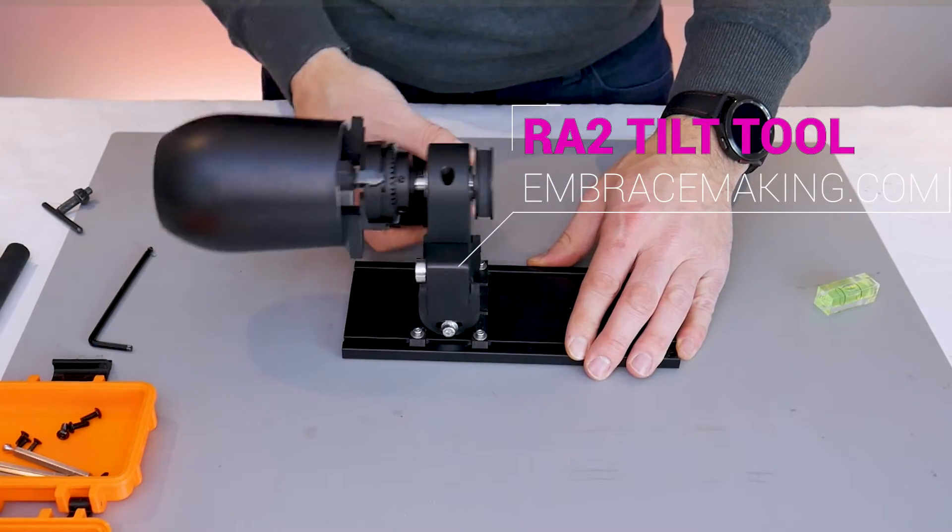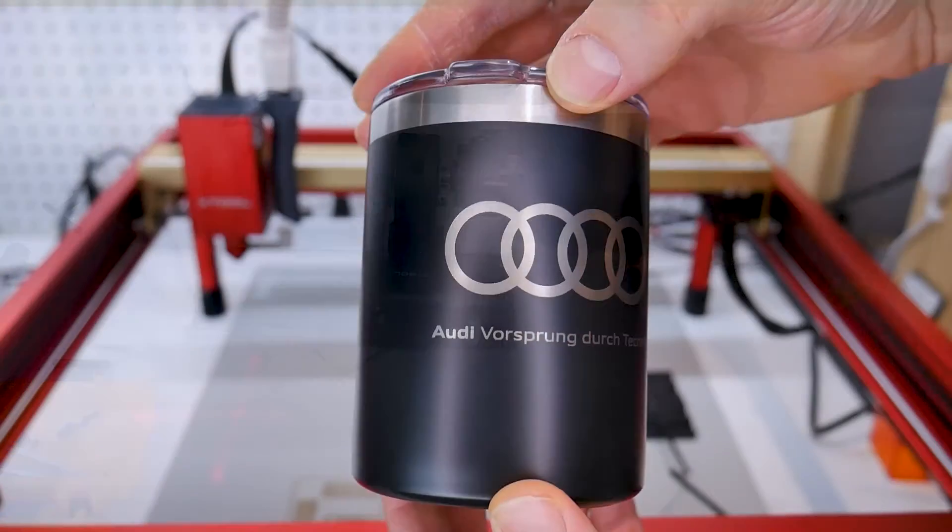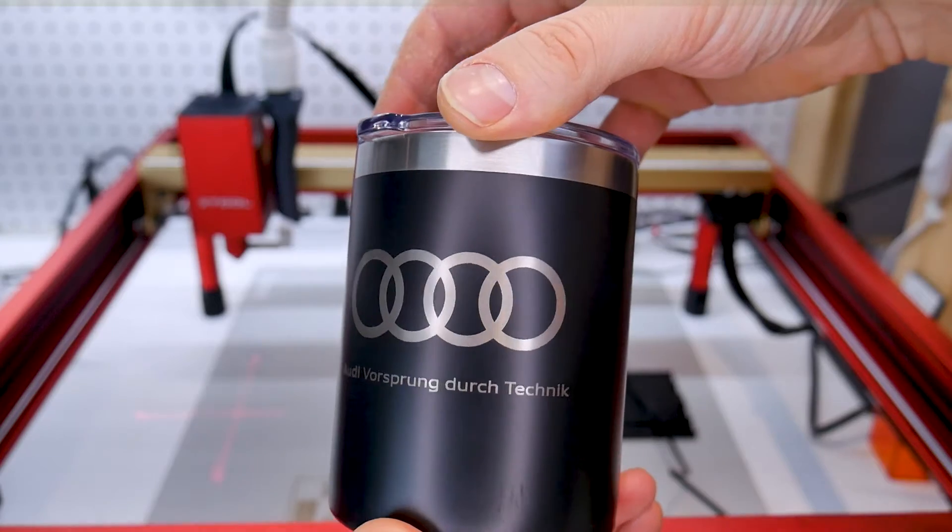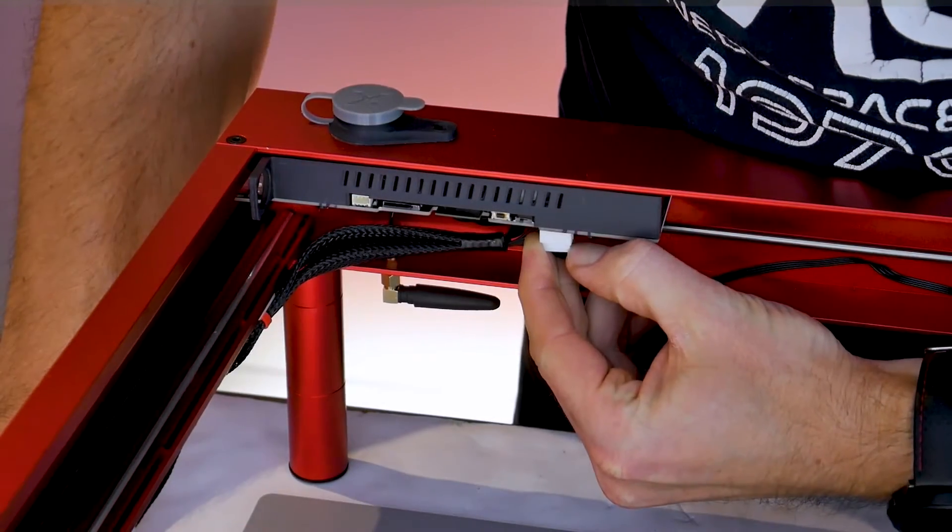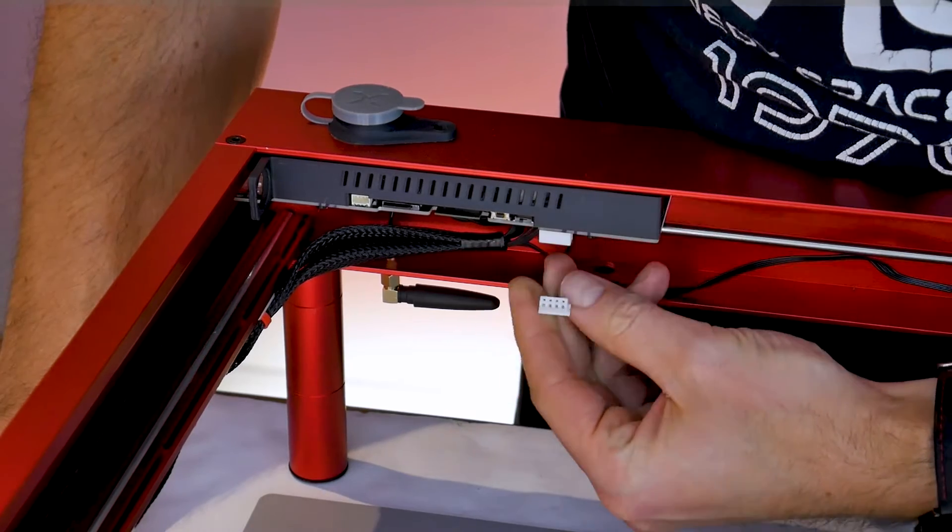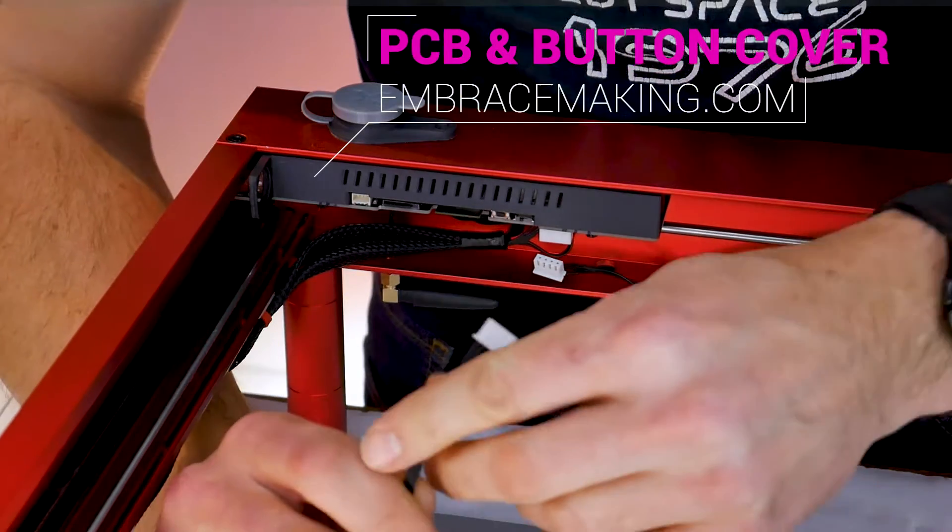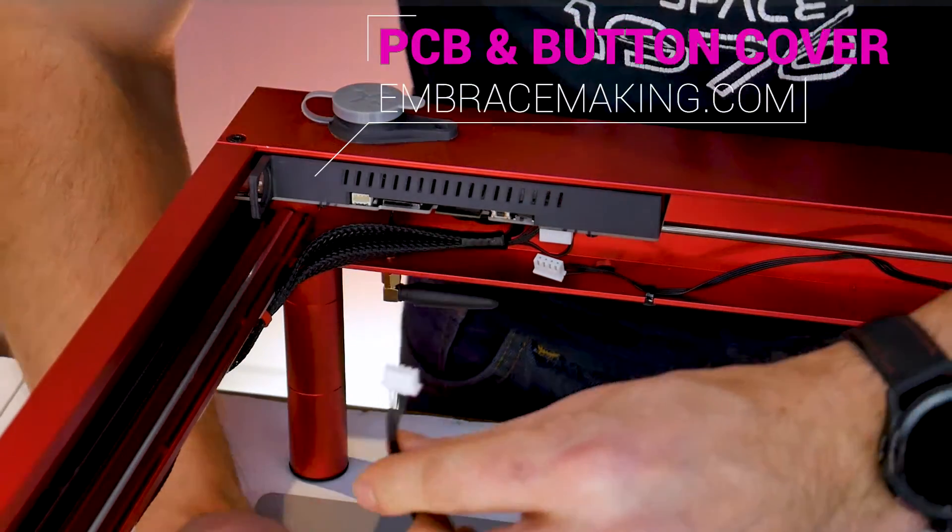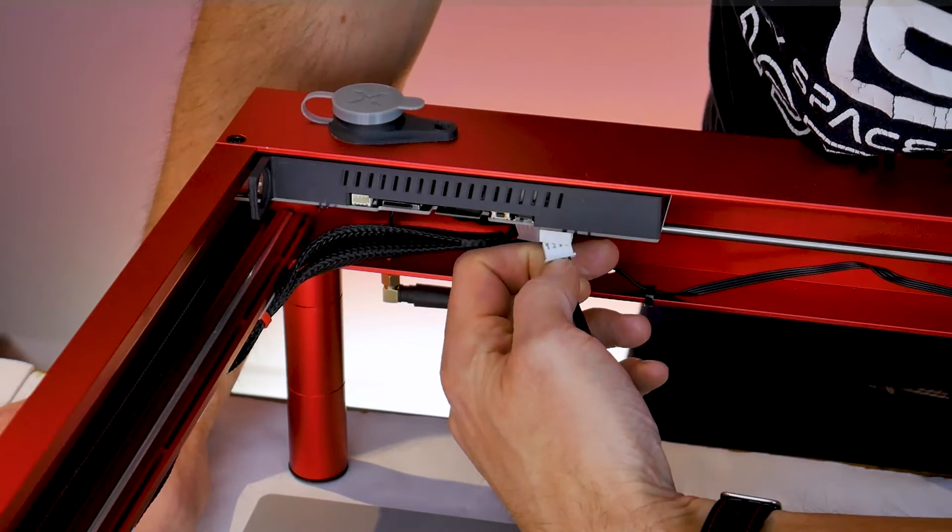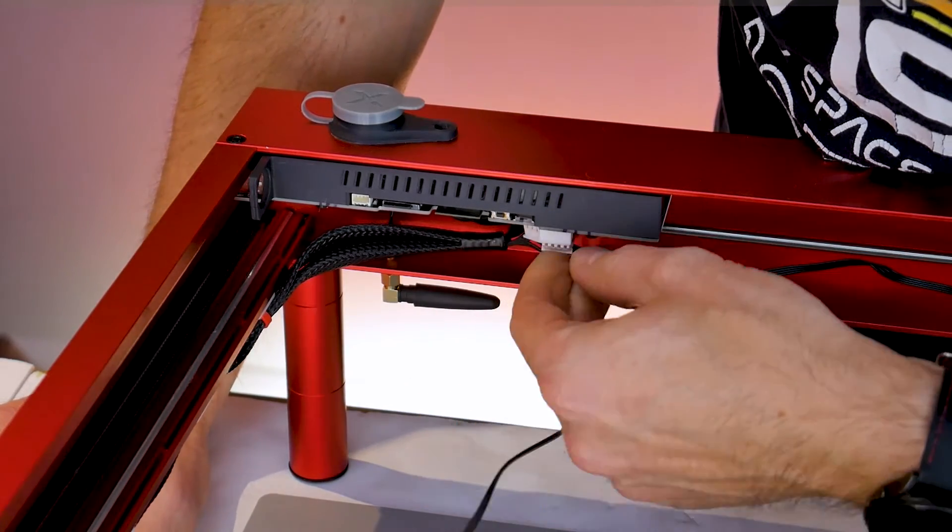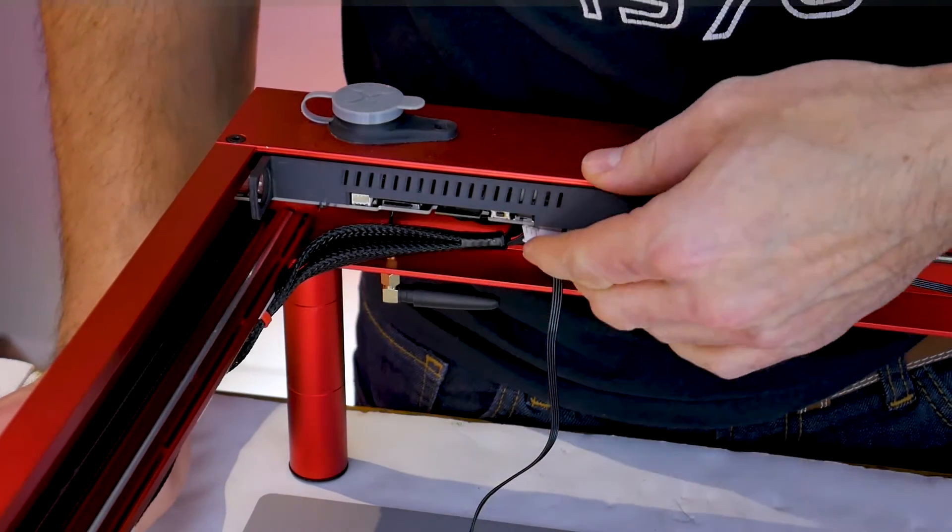The Xtool RA2 is one of the most versatile rotary attachments on the market right now, but it still suffers from one very annoying problem that could lead to damage to your machine. Every time you want to use it you have to unplug your Y motor from the main board and plug in the rotary attachment. This constant plugging and unplugging could damage the wires or the connector on the main board, which could be a very costly repair.